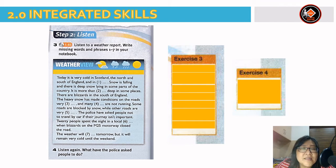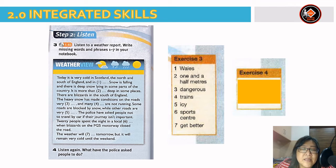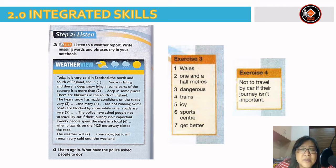Now let's go through the answers for exercise 3. Number 1 — Wales. Number 2 — one and a half metres. Number 3 — dangerous. Number 4 — trains. Number 5 — icy. Number 6 — sports centre. Number 7 — get better. And for number 4: what have the police asked people to do? The police asked people not to travel by car if their journey isn't important.